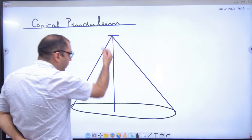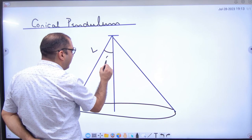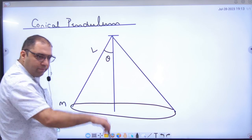The mass of stone is M. This is a string. The length of the string is given as L. And you have made the conical pendulum. What is the angle with the vertical? Theta. The conical pendulum makes angle theta.